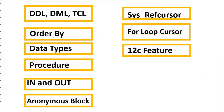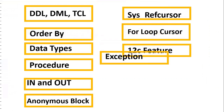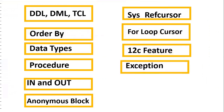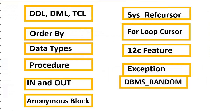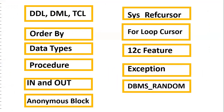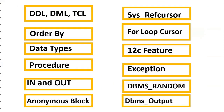We'll also see one of the 12c features — the FETCH top-N feature. And also exception handling. DBMS_RANDOM is the Oracle-provided package used to generate special characters or numbers, and DBMS_OUTPUT is used to see results on the console.